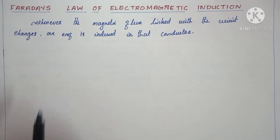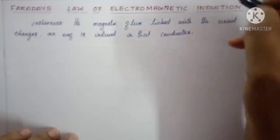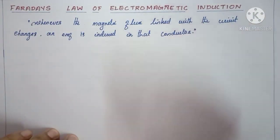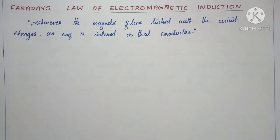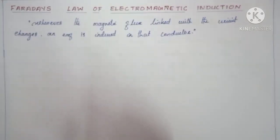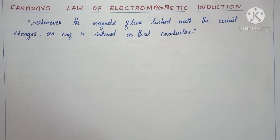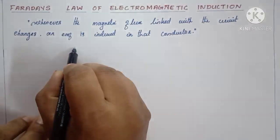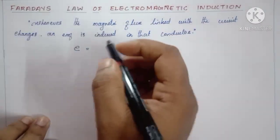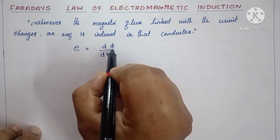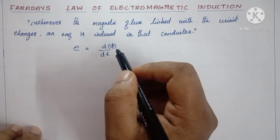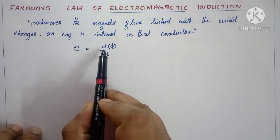According to Faraday, whenever the magnetic flux linked with a circuit changes, an EMF is induced in that conductor. The lines of force or magnetic flux associated with a conductor or any type of electric circuit — when it changes, that leads to the generation of EMF. The induced EMF is the rate of change of magnetic flux linked with the circuit.